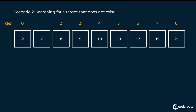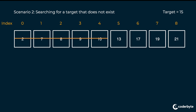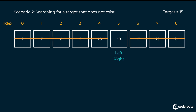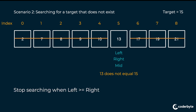Let's look at a second scenario where we're trying to search for a target that does not exist in the array — for example, a target of 15. We repeat the same steps: determine left and right markers, get the mid. A mid of 10 is less than 15, so we eliminate everything on the left-hand side. We repeat again: get left and right, determine the mid. 17 is greater than 15, so we eliminate the right. Now we're left with one element, which is both our left, right, and mid. We know that 13 does not equal 15. We reach a situation where we can no longer repeat the steps, and we have to stop searching. Whenever our left is greater than or equal to our right, we no longer have elements to search across.